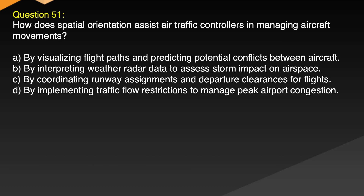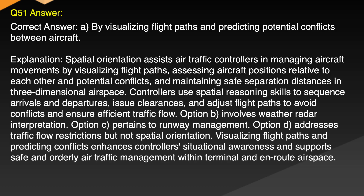Question 51. How does spatial orientation assist air traffic controllers in managing aircraft movements? A. By visualizing flight paths and predicting potential conflicts between aircraft. B. By interpreting weather radar data to assess storm impact on airspace. C. By coordinating runway assignments and departure clearances for flights. D. By implementing traffic flow restrictions to manage peak airport congestion. Correct answer: A. By visualizing flight paths and predicting potential conflicts between aircraft.